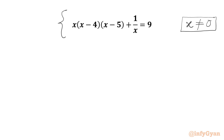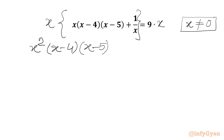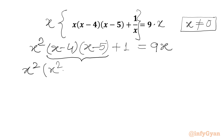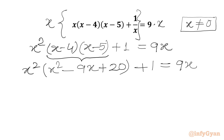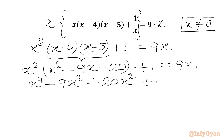Now I can multiply both sides by x first. So let us multiply by x. We get x squared times (x minus 4) times (x minus 5), and x times 1 over x is 1, and the RHS will be 9x. Let us multiply the two brackets first: x times x gives x squared, minus 5x minus 4x gives minus 9x, and minus 4 times minus 5 gives plus 20. Then we have plus 1, and RHS is 9x.